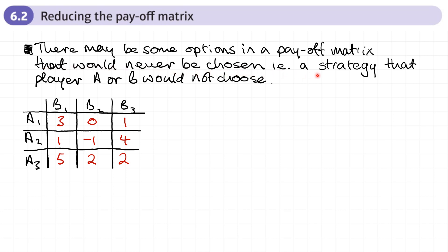Another way of putting that is a strategy that player A or B would not choose. So here's an example of a payoff matrix and each player has got three strategies, three different plays they could choose.